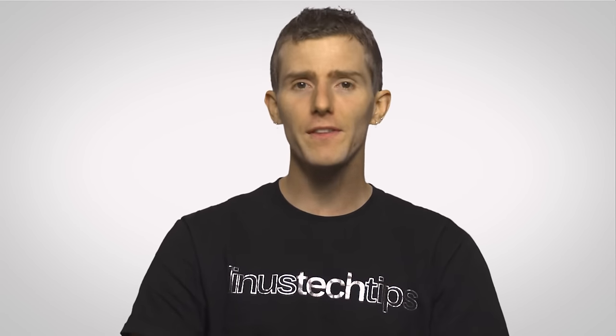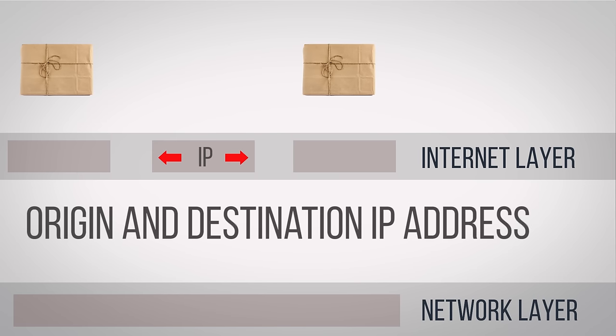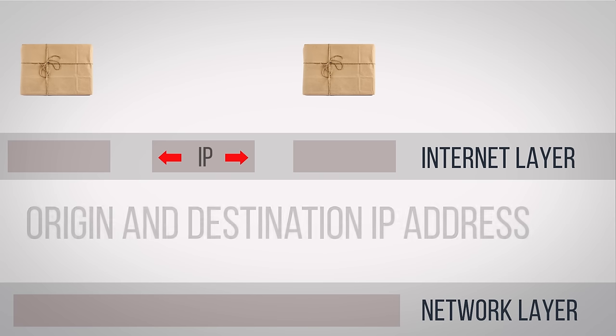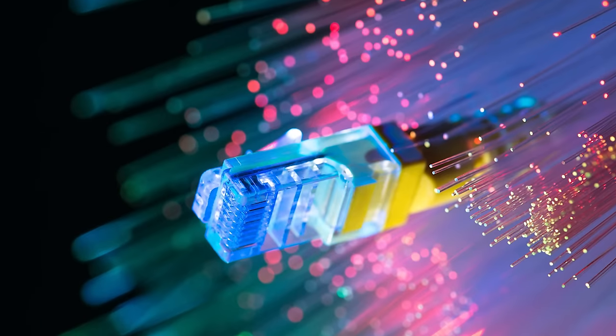The header also contains error checking information so that the receiving computer knows whether the packet's data arrived without any mishaps. After this is done, the packets are pushed onto the creatively named Internet Layer, which uses the Internet Protocol, or IP, to attach both the origin and destination IP addresses so the packet knows where it came from and where it's going. The data is then sent through the final network layer that handles things like MAC addressing, so the packets go to the right physical machine, as well as converting the data into electrical impulses that will actually pass through the proverbial series of tubes.